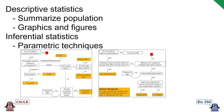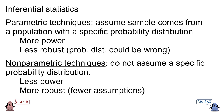When we use specific probability distributions to do statistical tests, we are technically using parametric techniques. It turns out there are two types of techniques in inferential statistics. Parametric techniques, the ones we have learned so far, assume that the sample comes from a population that exhibits a specific probability distribution. These techniques are more powerful than nonparametric techniques, but they're less robust because the probability distribution you're assuming could be wrong.